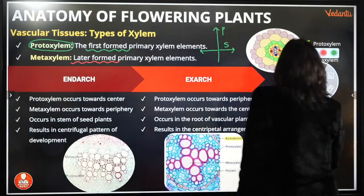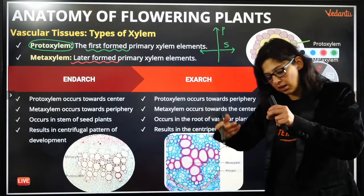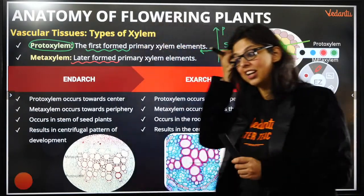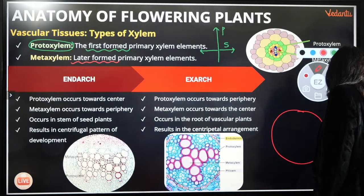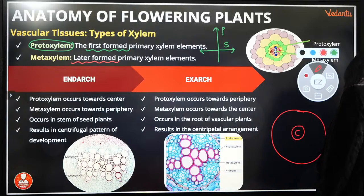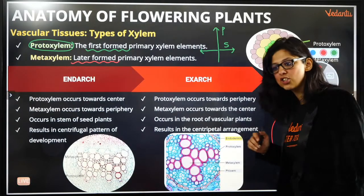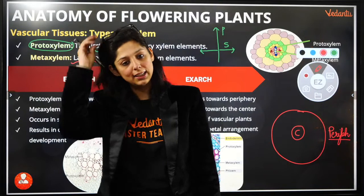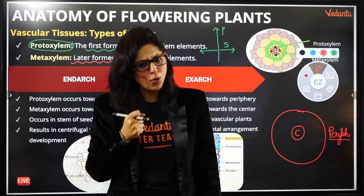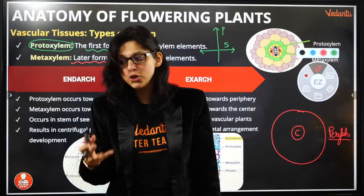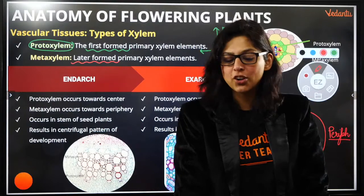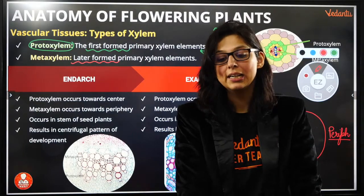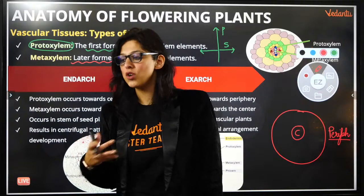Now let's come to exarch and endarch. If you take a cross-section of a plant, you have the periphery on the outside and the center. Now the proto-xylem can be either towards the periphery or towards the center. Remember the mnemonic PPE: Proto-xylem towards the Periphery is Exarch. If proto-xylem is towards the periphery, the arrangement is called exarch. If proto-xylem is towards the center, it is called endarch.